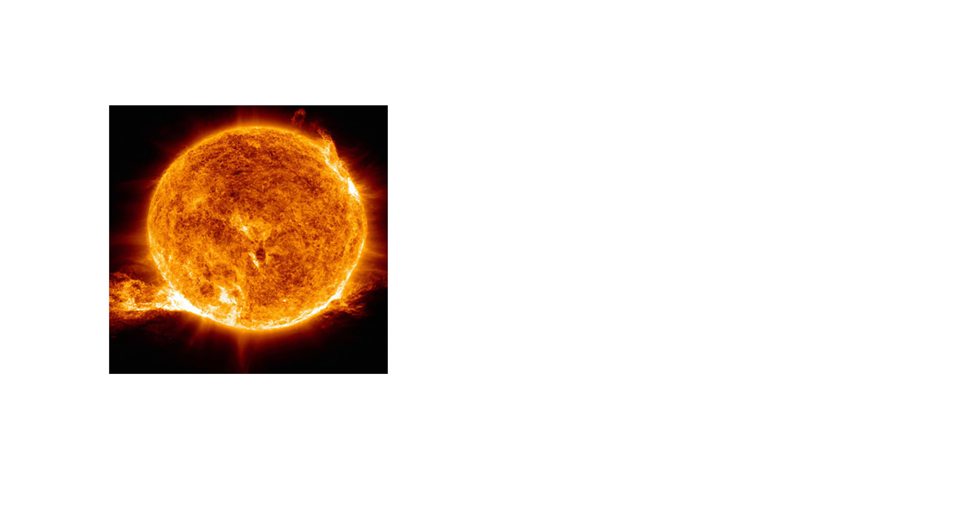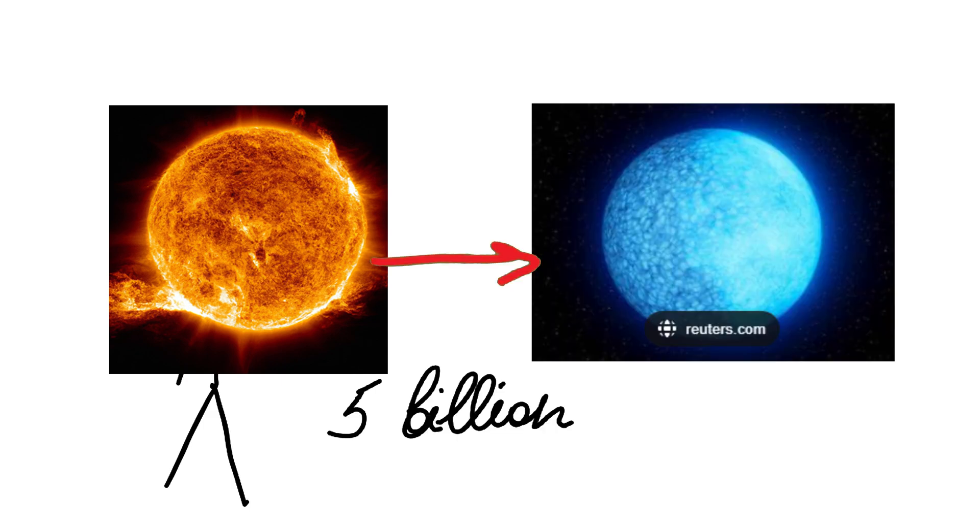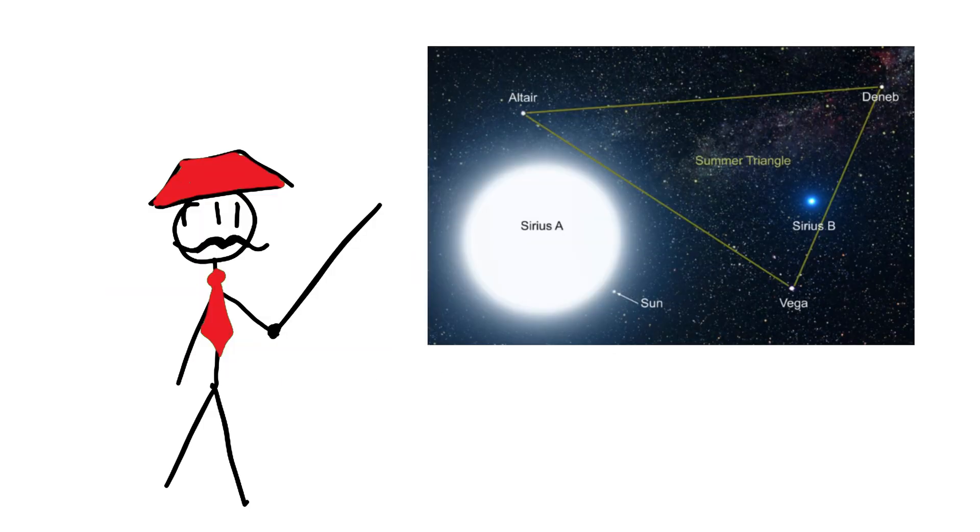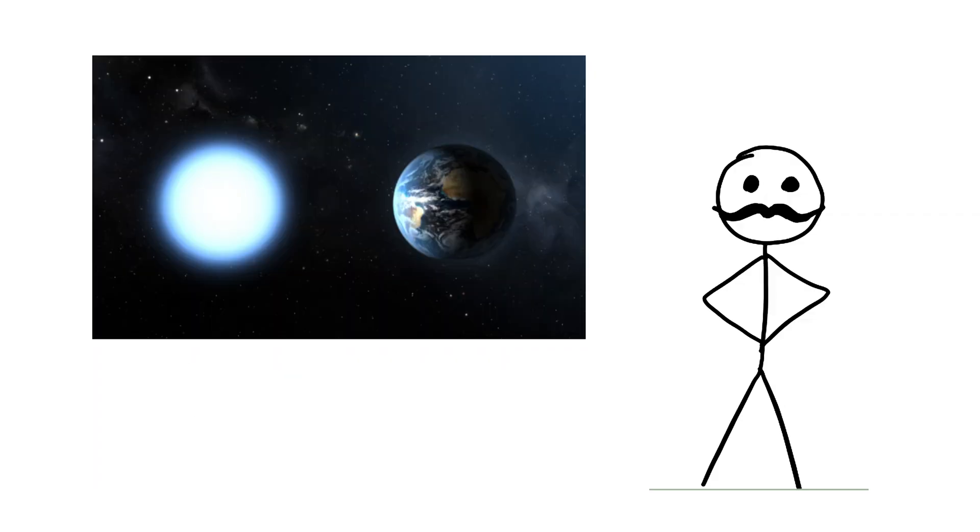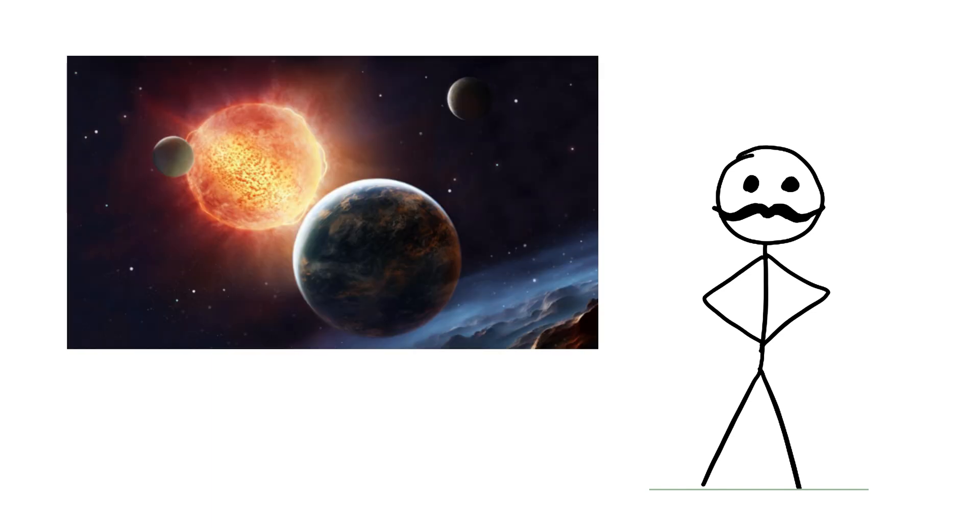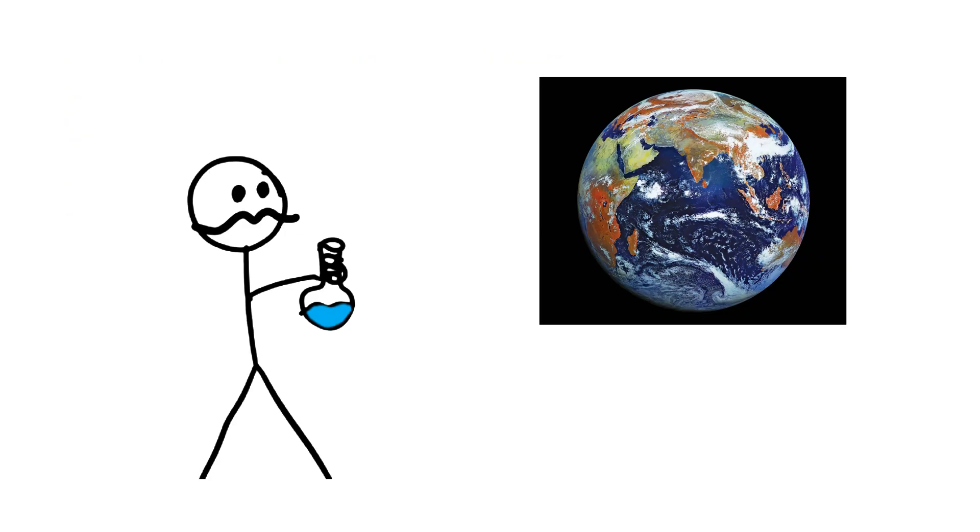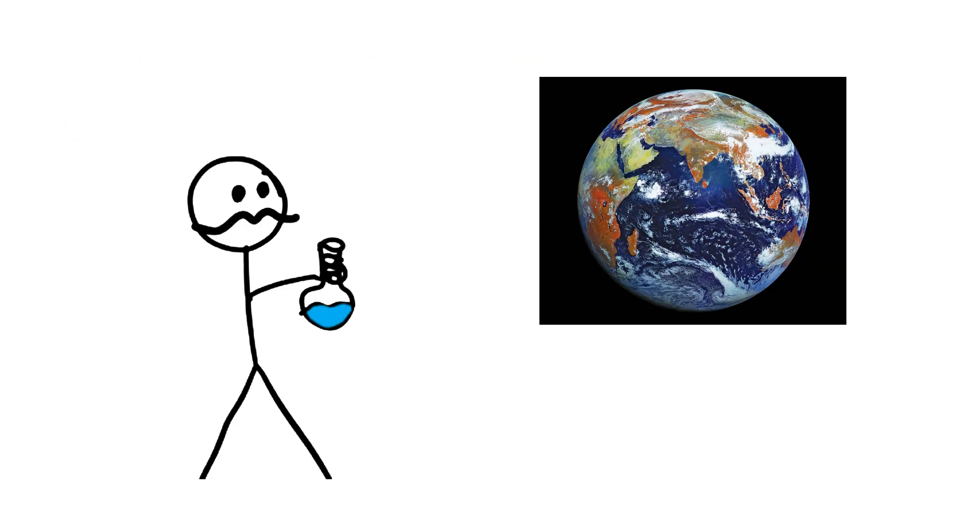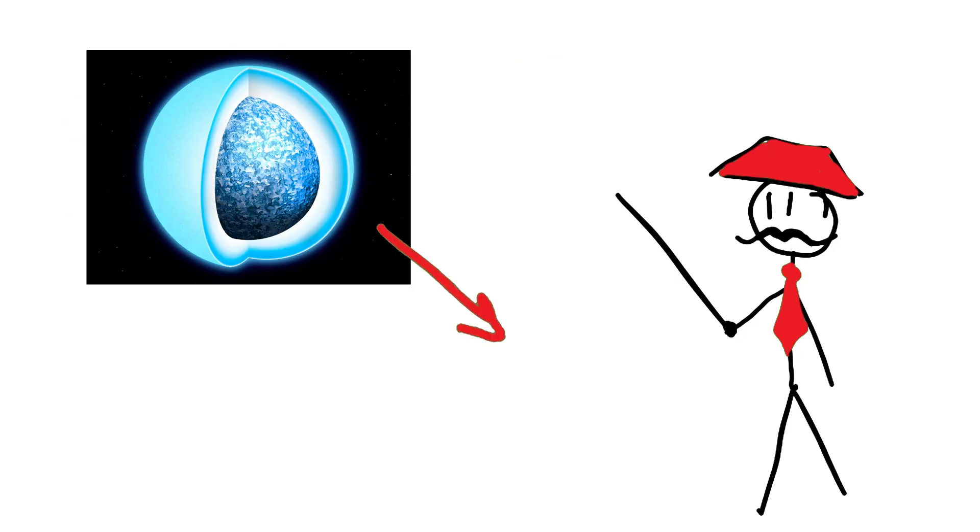Our sun will also become a white dwarf in about 5 billion years. Studying white dwarfs helps scientists understand how stars change and end their lives. These stars are incredibly dense, packing a mass comparable to the sun into a volume roughly the size of Earth. This density means that if you were to pick up a small piece of a white dwarf, it would weigh thousands or even millions of times more than the same amount of material on Earth.